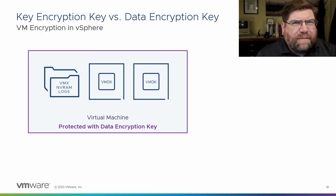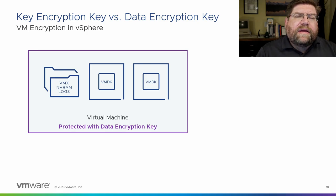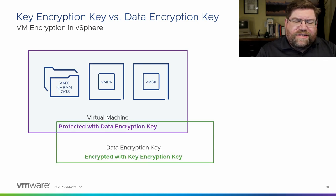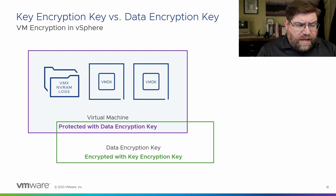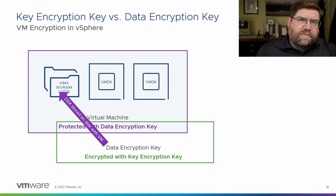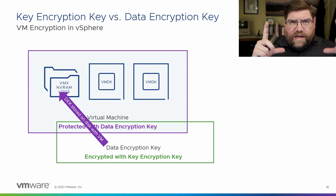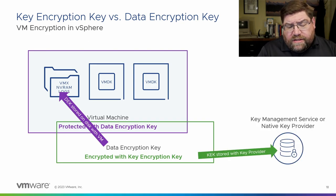You might think: hey, that sounds like the dumbest thing ever — why would you put the keys there? It's like leaving the keys in the ignition of my truck; somebody can just come along and unlock it, right? Well, we're not that dumb — we have something called the key encryption key, or KEK. We use that to encrypt the data encryption key before we write it into the config file. The data encryption key stays with the VM, which is nice because as you replicate and back up VMs, all of what it needs goes with it — except for the keys, which stay with the key provider.